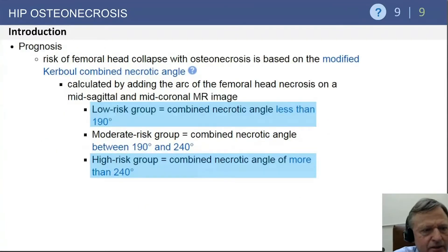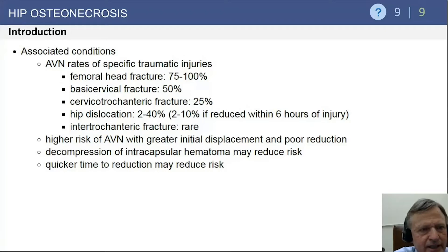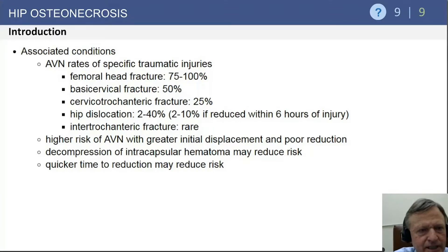AVN rates vary by fracture type: femoral head fractures carry a 75–100% risk; femoral neck fractures approximately 50%; fractures below the femoral neck around 25%. For hip dislocation, there is considerable variability, but a key exam point is that reduction delayed greater than six hours significantly increases the incidence of AVN.